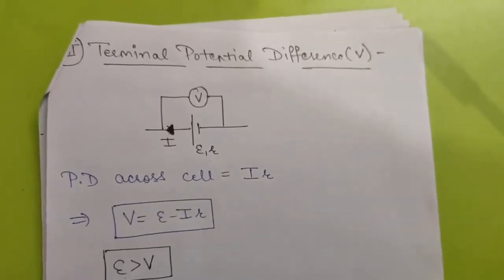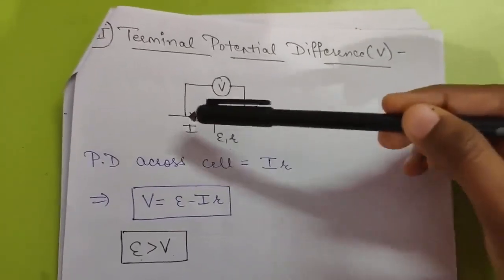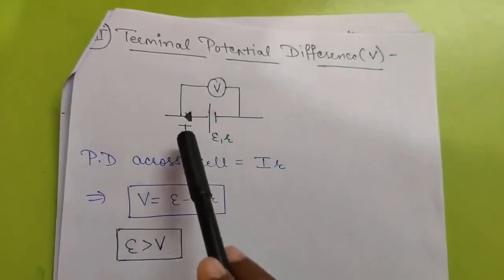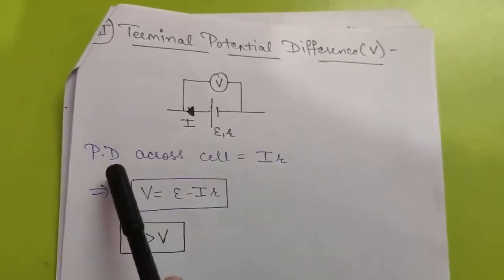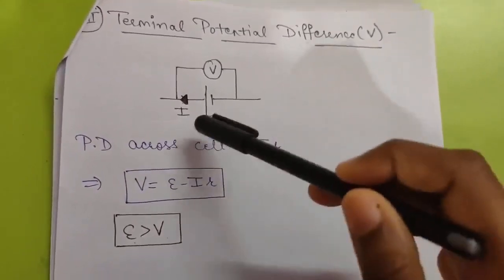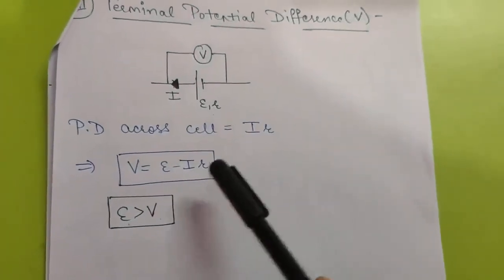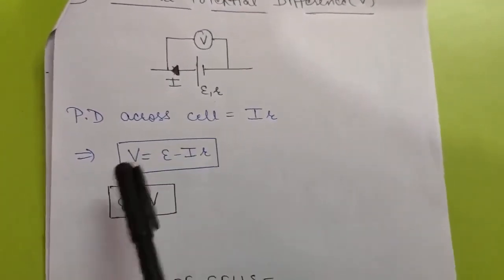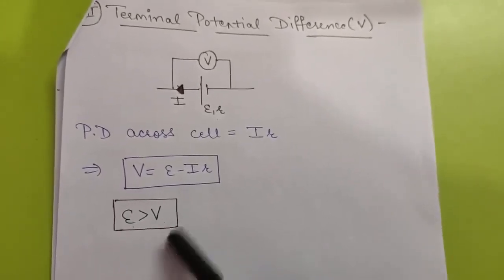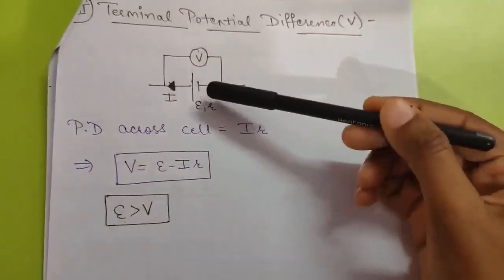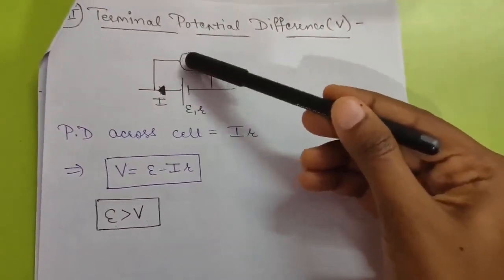The next is terminal potential difference. The diagram is the same. Earlier when I was zero, V was equal to E. But now if I is flowing, there will be some potential drop across the cell due to internal resistance, and the formula for this potential drop is IR. So the overall voltage will be equal to E minus IR, because the voltage drop is always negative. As you can see, E is always greater than V. EMF of a cell is always greater than or equal to the terminal potential difference because when current flows through the cell, resistance R is offered, which decreases the overall terminal potential difference.